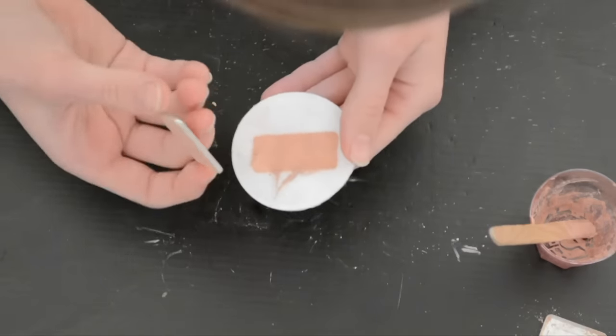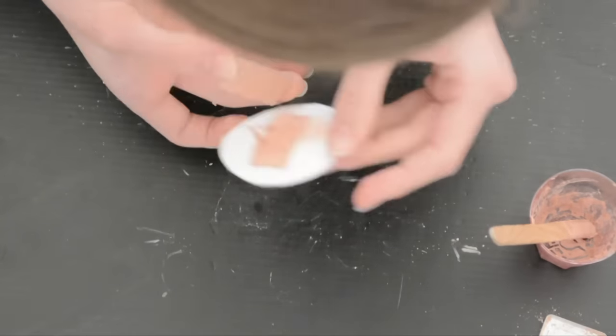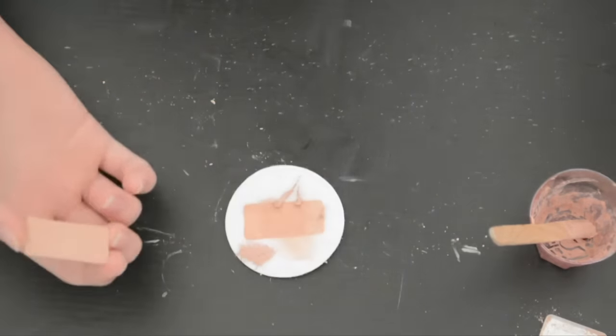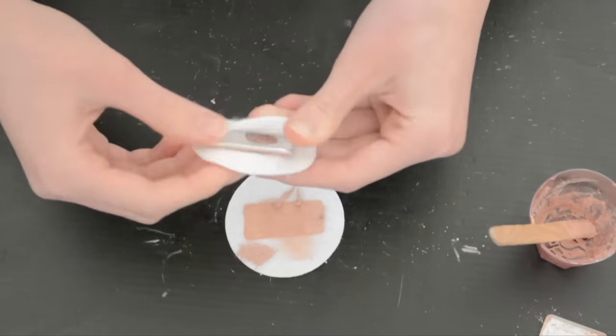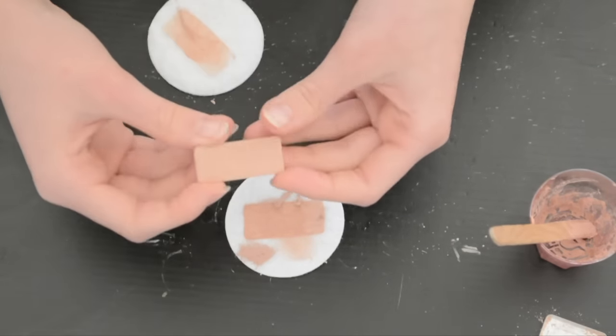Otherwise, your eyeshadows will not be eyeshadow-y, if that makes sense. Squish out as much as possible and then just set it aside to dry and the alcohol will evaporate and it should be just like normal eyeshadow again.